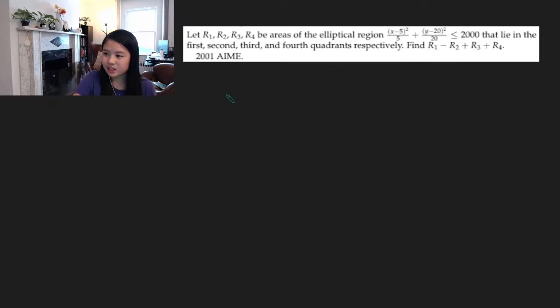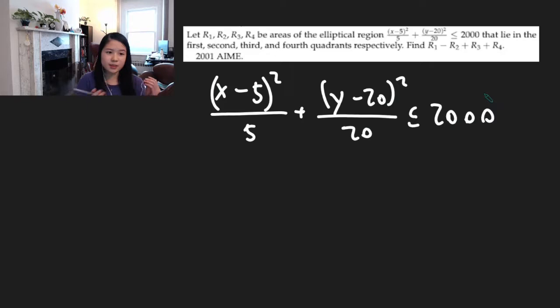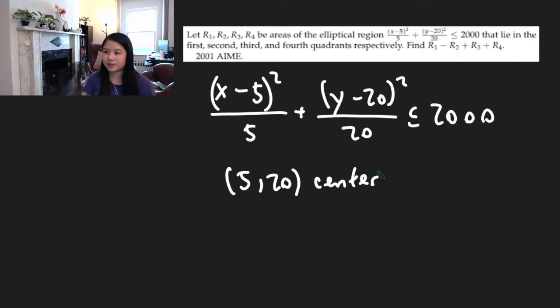The next problem is from DMM 2009, but I modified it so the numbers would be nicer. We have another equation of an ellipse: (x − 5)²/5 + (y − 20)²/20 ≤ 2000. This is a translated ellipse, meaning it's not centered at the origin — it's centered at (5, 20).